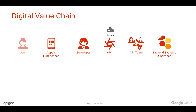You need to start thinking about the end users who are using these applications built by the app developers and making API calls. You need to understand their consumption patterns and satisfy their needs by building new kinds of APIs. You have to connect all these dots in the digital value chain so that you can understand and improve your entire API program.